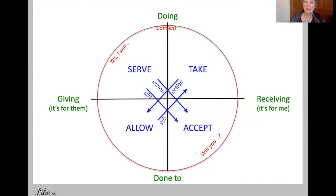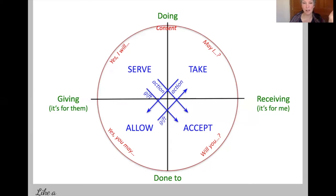In the take-allow dynamic, the gift that the allower is giving is access to themselves — they're giving their body. So the question that creates the take-allow dynamic is 'May I?' 'May I play with your hair? May I feel your feet? May I come over and use your hot tub? May I borrow your truck?' And the allower says, 'Yes, you may,' or 'Yes, you can do that on Thursday,' or 'Yes, only to here,' or 'Yes, I'm available for this much but not that much.'